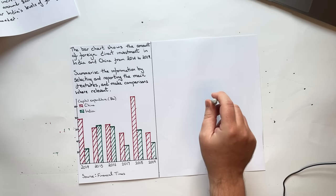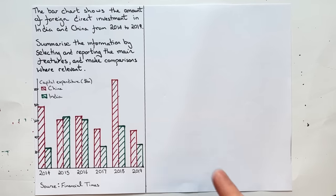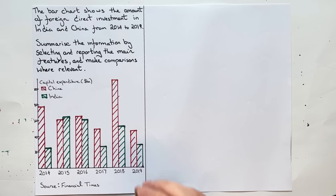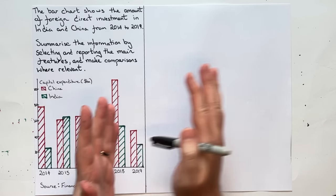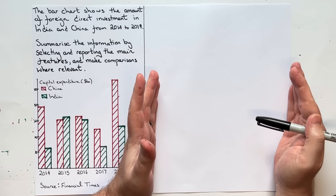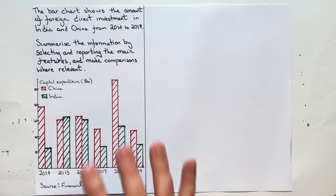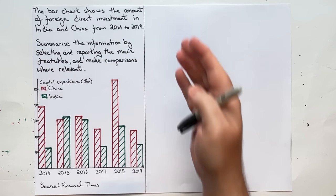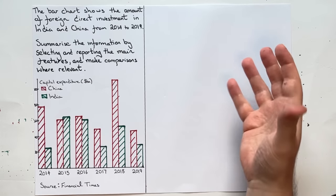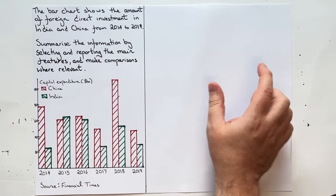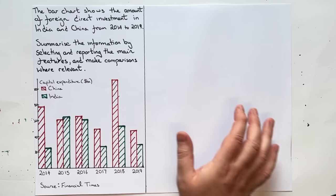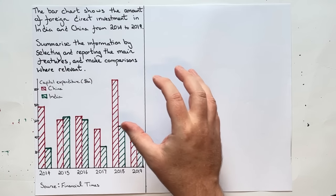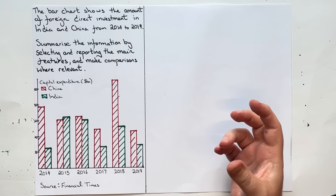Chris here from IELTS Advantage. In this lesson we're going to look at Task One writing academic, specifically bar charts, and I'm going to write a band nine response with you. The best way to teach Task One writing is to talk through with students what you are thinking and what you are doing while you are writing, because Task One academic is as much a thinking test as it is a writing test.